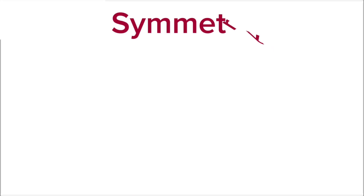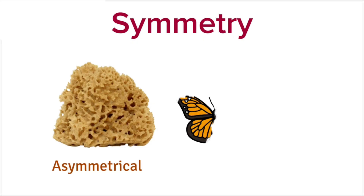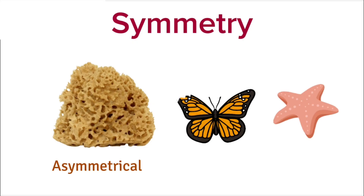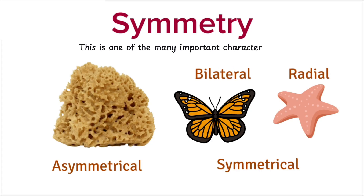To summarize: if an organism has a random, uneven body shape, it is called asymmetrical. But if it has a balanced, repeating pattern, then it shows symmetry — and that symmetry can be either bilateral or radial. This is one of the many important characteristics scientists use to classify animals.